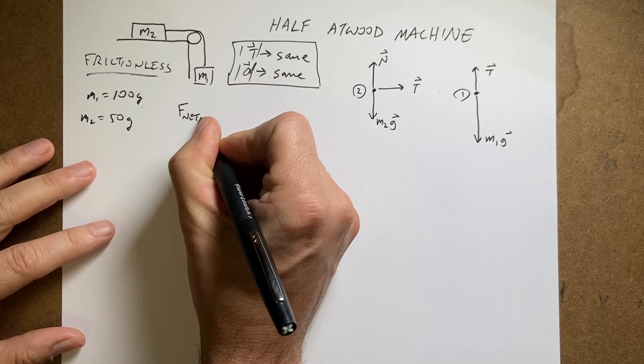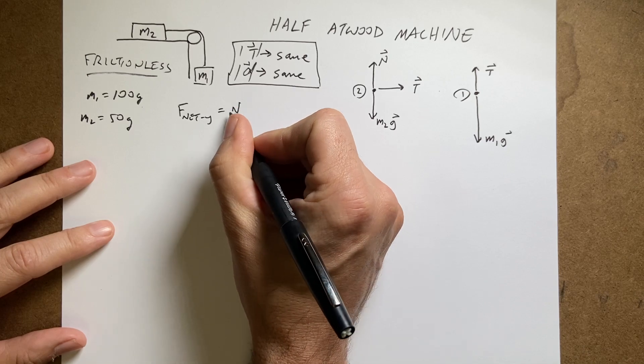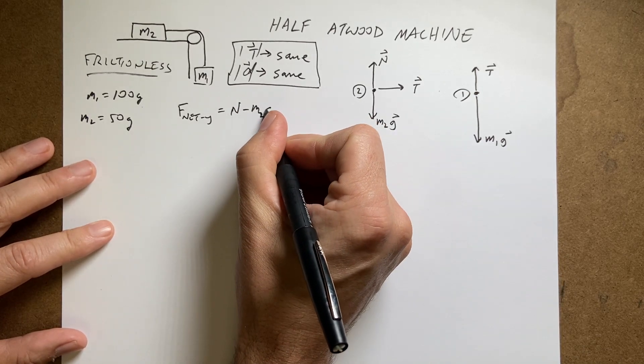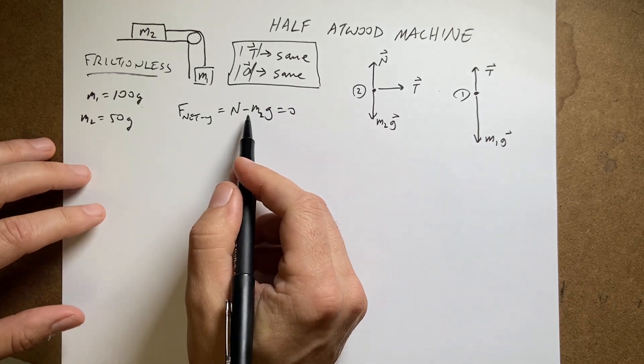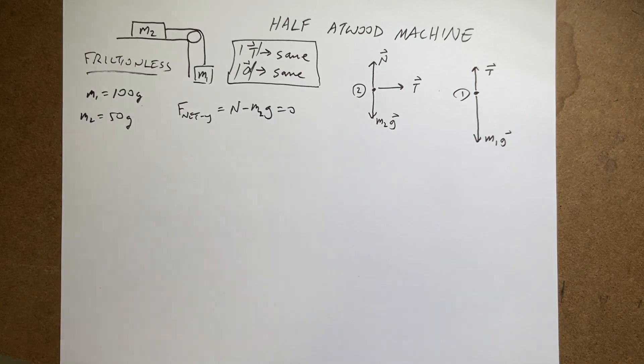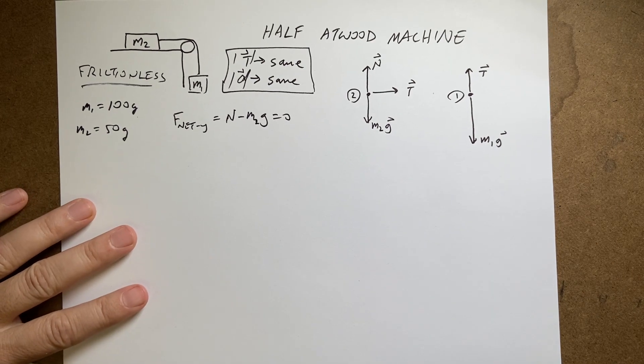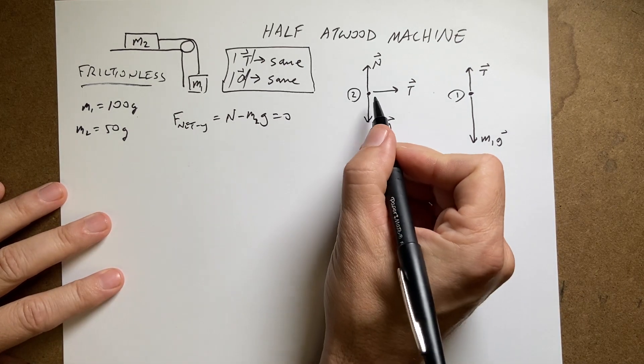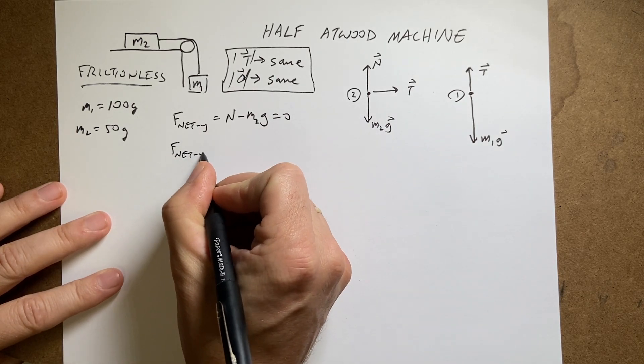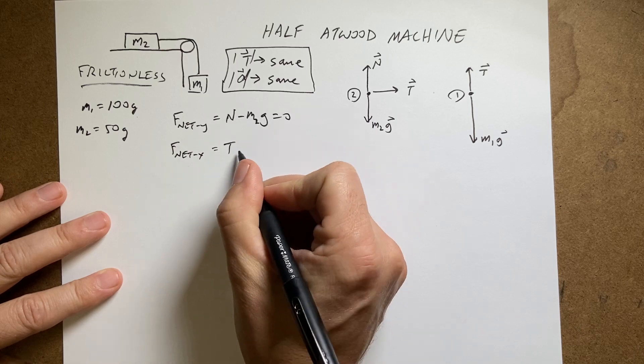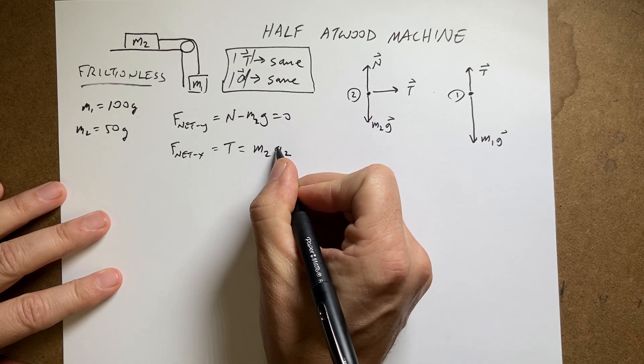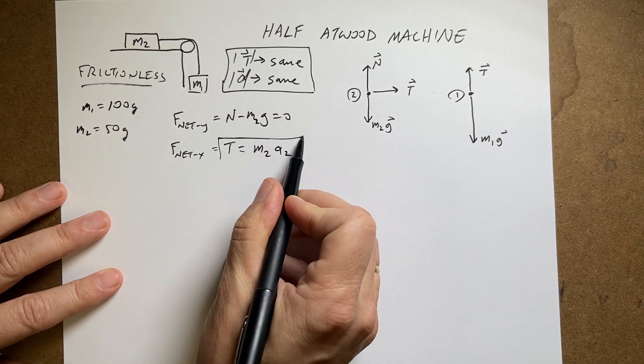F net y equals n minus M1g. No, that's M2. M2g equals zero. Now that's minus because I'm writing it in the y direction. It's in the negative y direction. So that's it. But I don't really care about that. Nothing really matters. So it doesn't matter. In the x direction I can say f net x equals t equals M2a2. And so that's an equation I have right there.